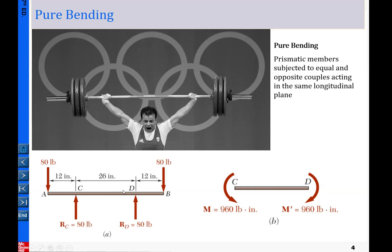In segment CD, the moment is constant. The moment basically here is equal to 80 times 12 and equals 960. In this portion CD, it really doesn't matter which cross section you pick. If I pick this cross section, this is 80 pounds and this is 80 pounds and this is 12 inches. You can always find in this section the moment equal to 960 pounds-inch.